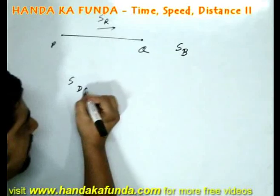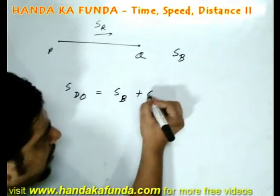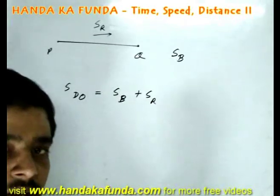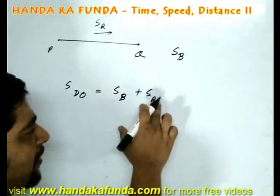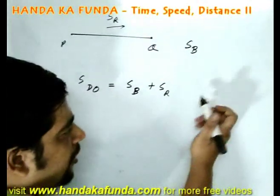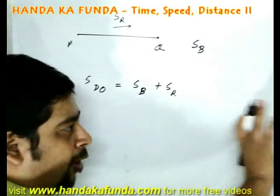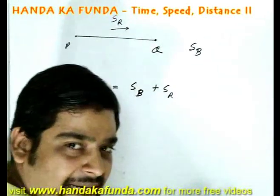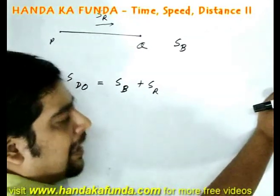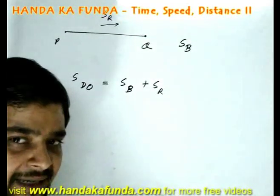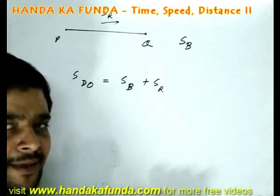Then what will be the downstream speed? Downstream speed will be the speed of the boat in still water plus the speed of the river. Suppose the speed of the boat is 8 meters per second and speed of the river is 2 meters per second. The boat on its own can go 8 meters in 1 second. The water flow will push it 2 extra meters in 1 second. So total distance gained is 8 plus 2 or 10 meters. That is why going downstream it is speed of boat plus speed of the river.